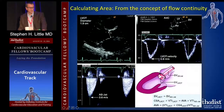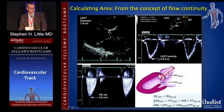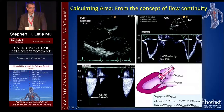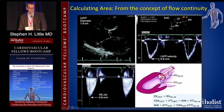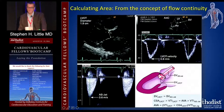For calculating valve area — typically mitral or aortic — the concept is flow continuity: stroke volume on one side of the valve equals stroke volume on the other side. Volume = area × distance = area × distance. The unknown is the aortic valve area, so you rearrange: LVOT stroke volume divided by the VTI of the aortic jet gives the aortic valve area.